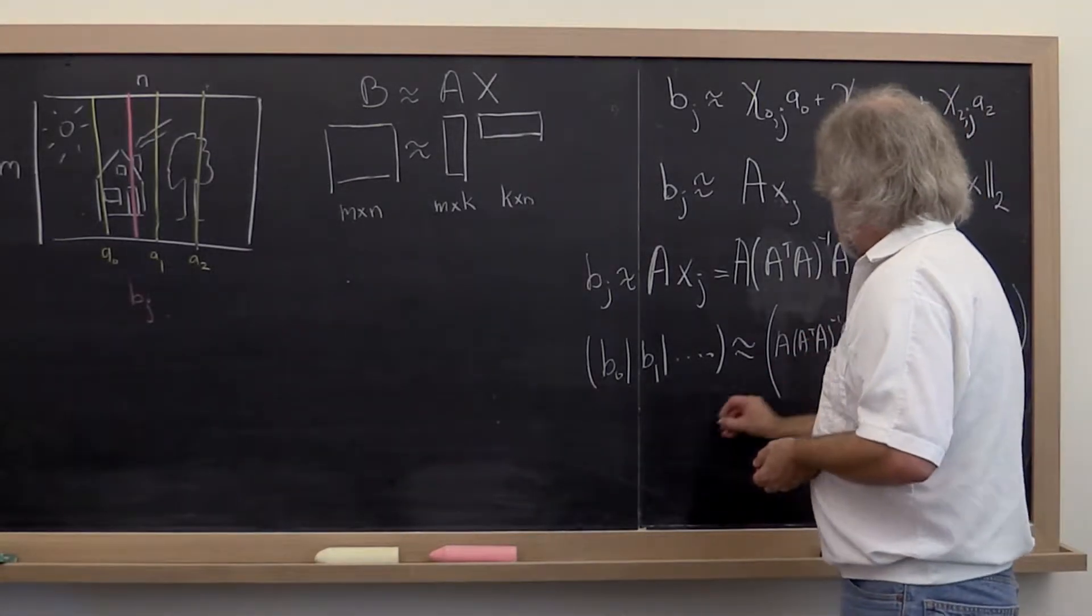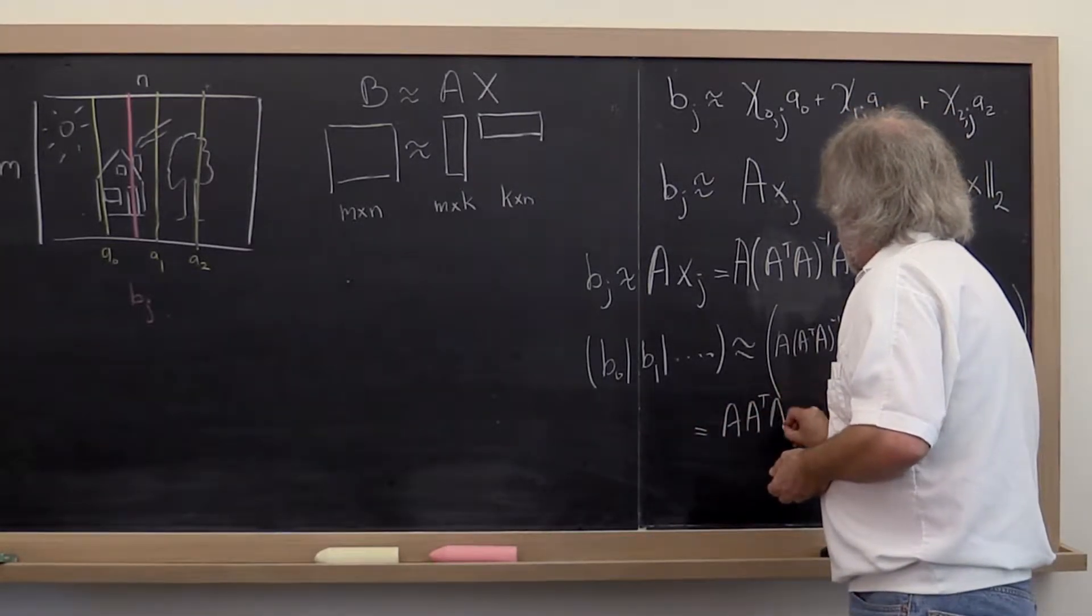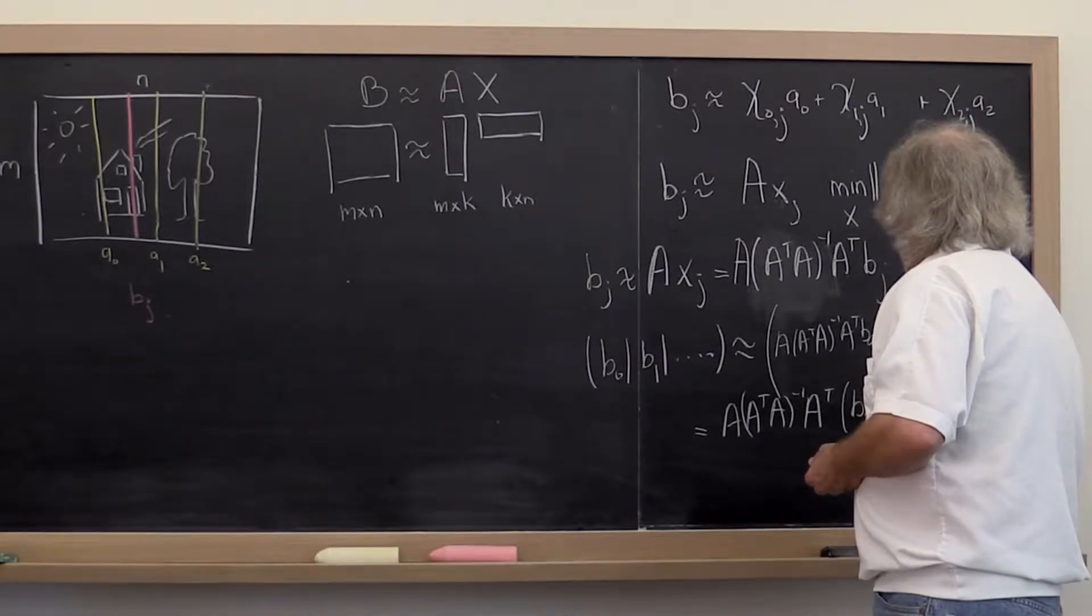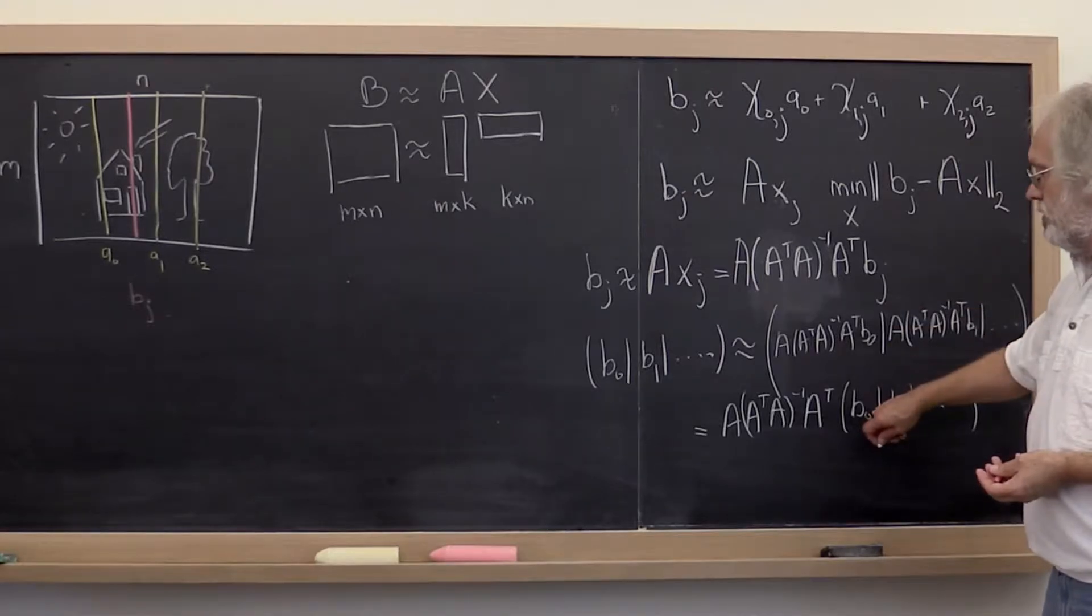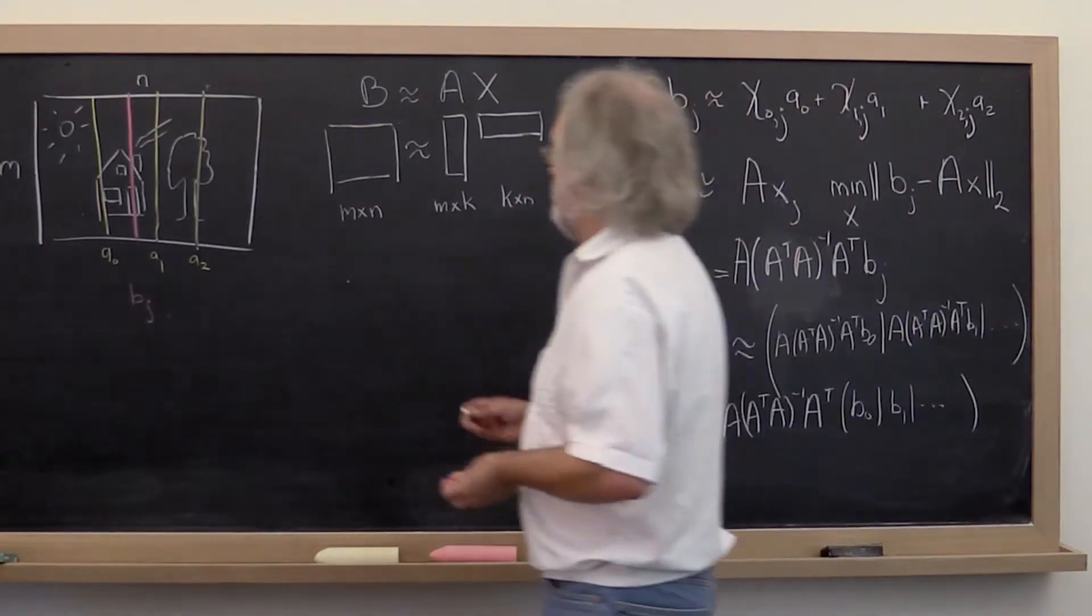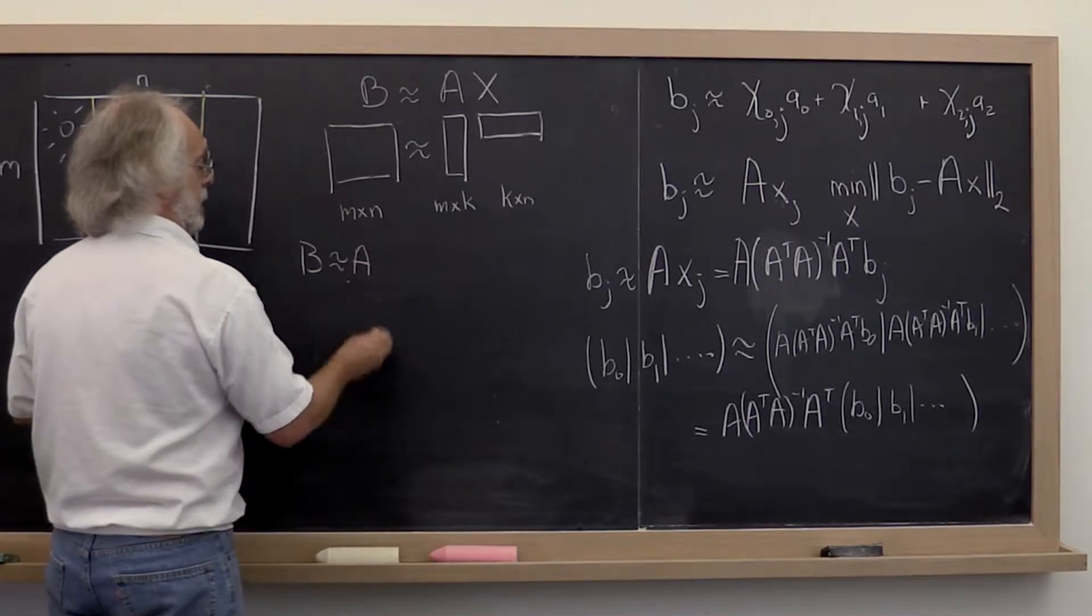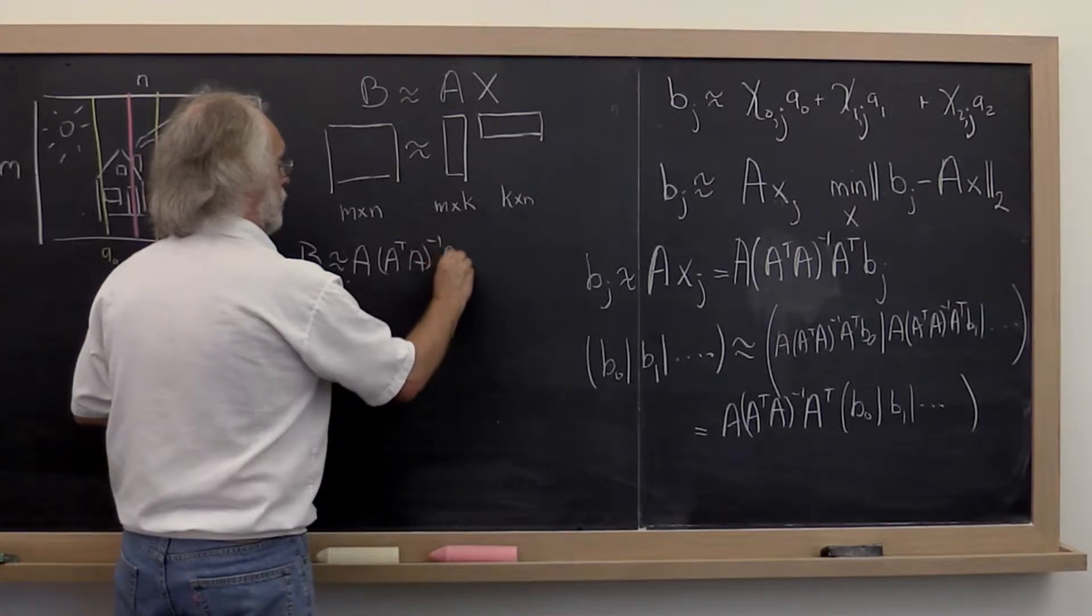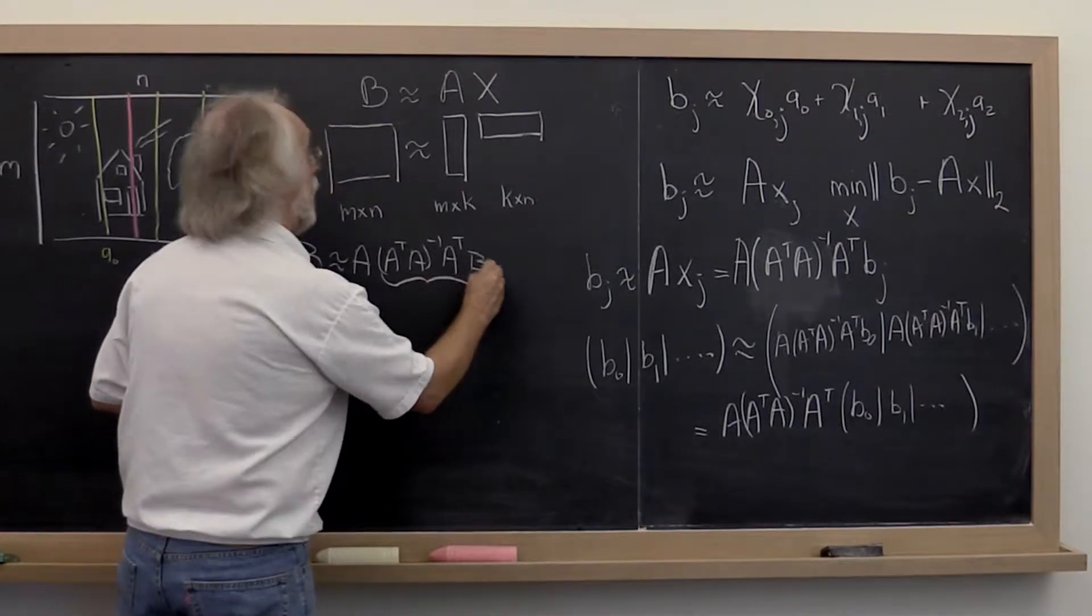And this is actually equal to A times A transpose A inverse A transpose times B0, B1, and so forth. This is equal to that and therefore this is approximately equal to that. So what do we have now? We have that B is approximately equal to A times A transpose A inverse A transpose times B. We can choose this to be our matrix X.